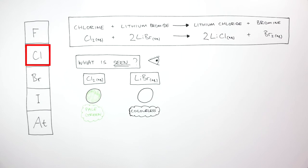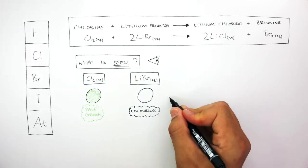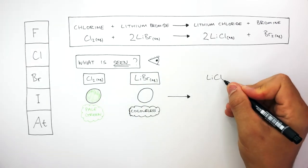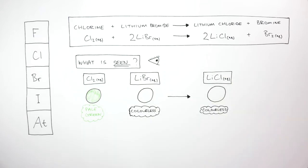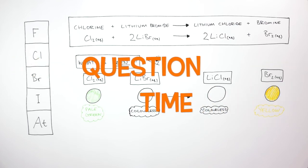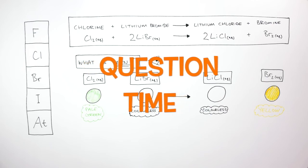The more reactive chlorine displaces the less reactive bromine from the halide salt. This forms lithium chloride, which is colorless, and bromine, which is yellow. The less reactive halogen always controls the color of the products. It's question time - attempt these questions to check your understanding.